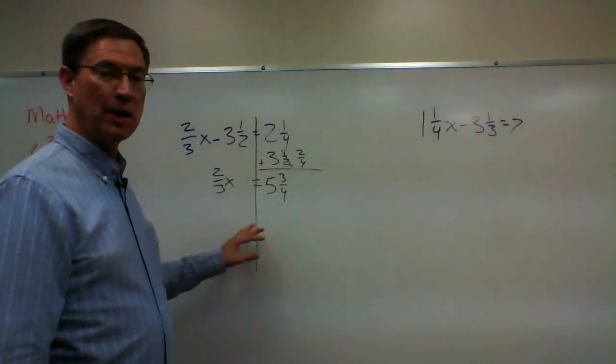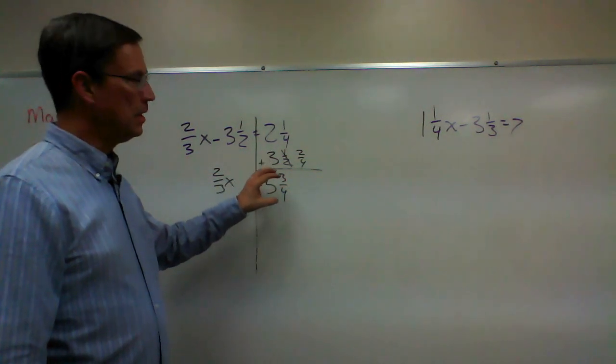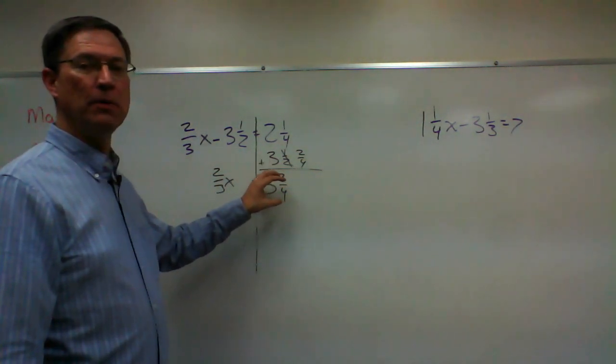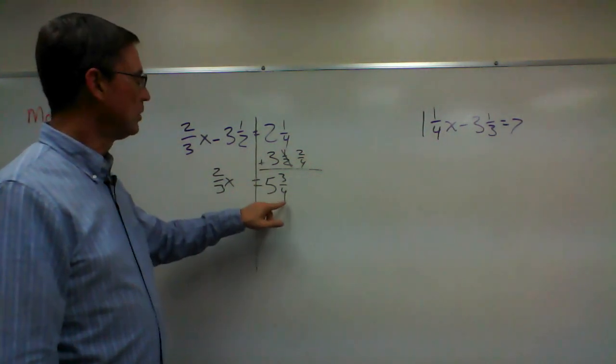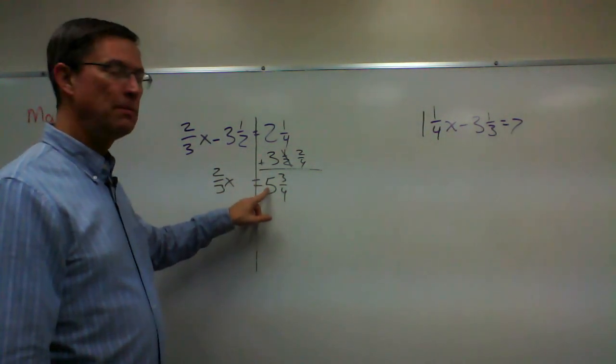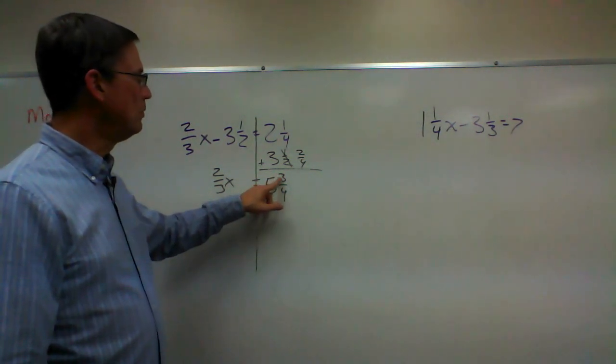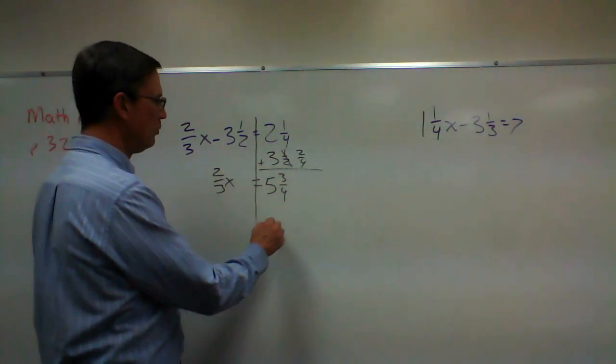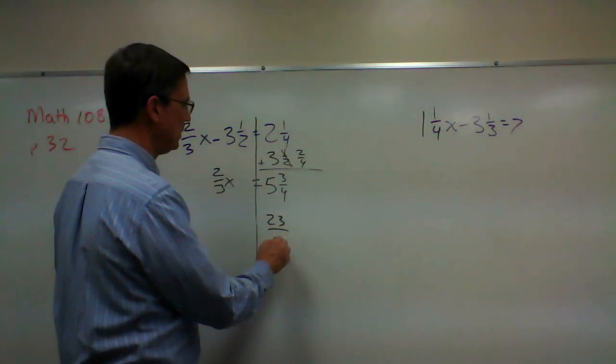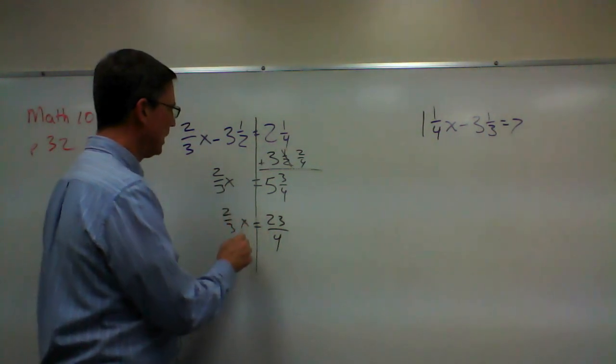Now, whenever you're doing problems like this that have a mixed number, the key is you've got to convert the mixed number into an improper fraction. Remember how to do that? Multiply the denominator times the number out front, so we'd get 20, add the numerator, so 23 over 4. So I'm going to rewrite it down here as 23 over 4, and then bring down the two thirds x.